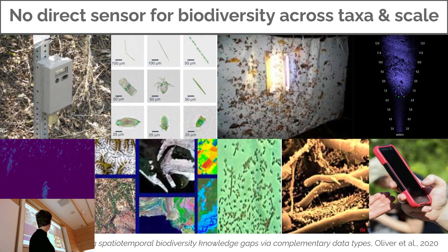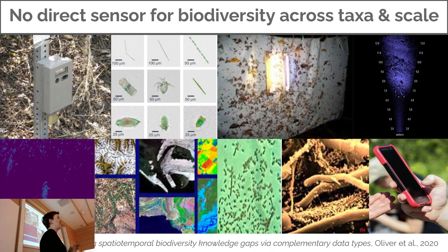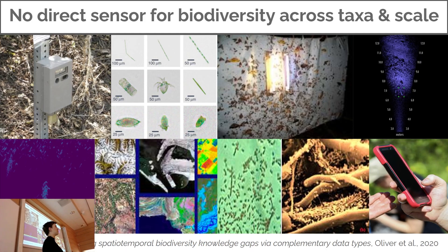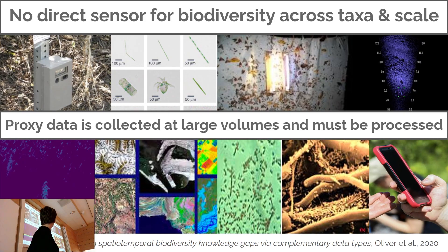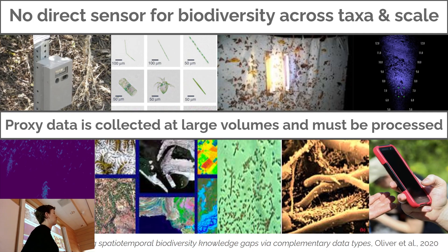The thing that's challenging for all of us, and what sets this apart from many other applications of machine learning for the sciences, is that there is no direct sensor for biodiversity across taxa and scale. If you're studying weather, you can put out temperature sensors and pressure sensors that directly measure the quantities you're interested in. But if you're interested in studying biodiversity, instead we have to use incredibly diverse proxy sensors — things like images, sound, or DNA. That proxy data is collected at very large volumes and must be processed, and that processing often requires very expensive and limited expertise. So it doesn't scale well.